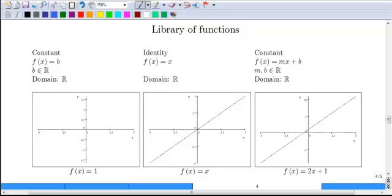A constant graph is just going to be a straight horizontal line. And in this case I said the function was f equals 1 and so we have that straight horizontal line at 1.